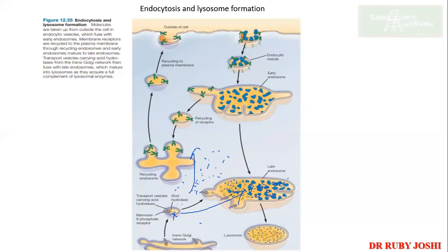Think of it like your stomach — enzymes are already present, and when you're hungry the gurgling sound is from the decrease in pH making enzymes active. Similarly, the cell brings in materials from outside to digest in the lysosome — its digestive system. This is how the cell gets its dNTPs, new RNA, and amino acids to synthesize new components. This is how cells get their resources from outside.